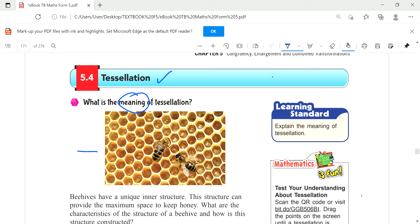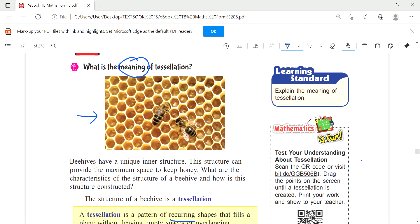This is a beehive. We have a beehive and what do you see here is the structure. There is a shape - the shape is hexagon, right? And it's recurring.